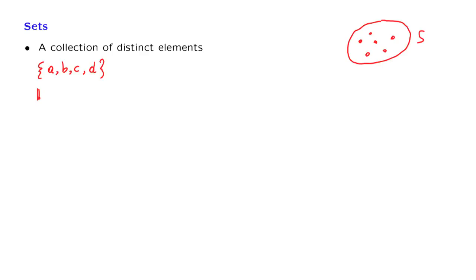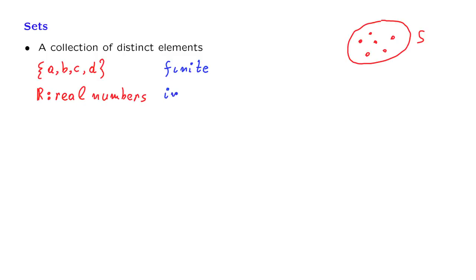Another set could be the set of all real numbers. Notice a distinction here: the first set is a finite set — it has a finite number of elements — whereas the second set is infinite. In general, sets are of these two kinds: either they're finite or they're infinite.